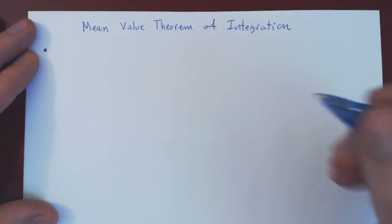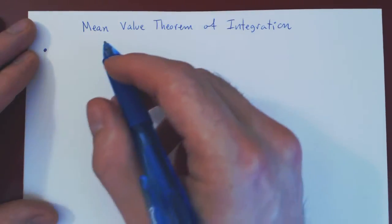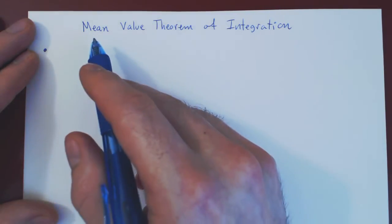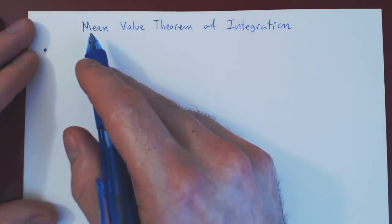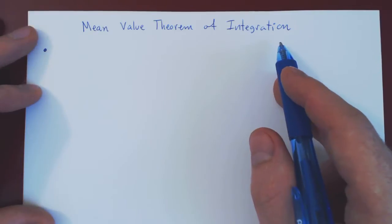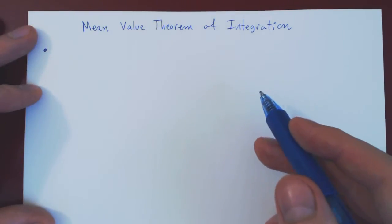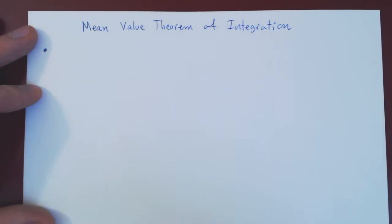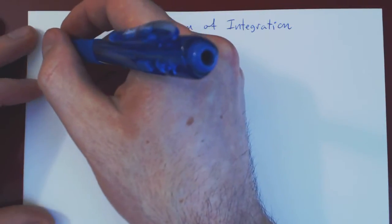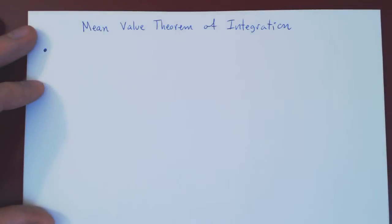As you should know, there is a mean value theorem of differentiation, but there is also a mean value theorem of integration. Let's look at the statement first, and then we'll ask why is this intuitive. Once we look at the geometry of the equality, we'll see that the geometry is very simple.